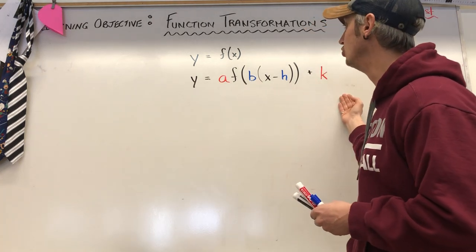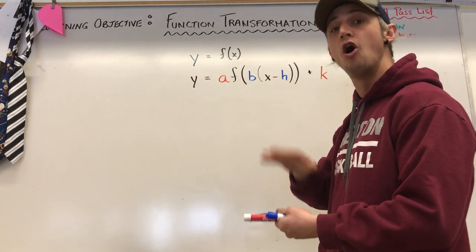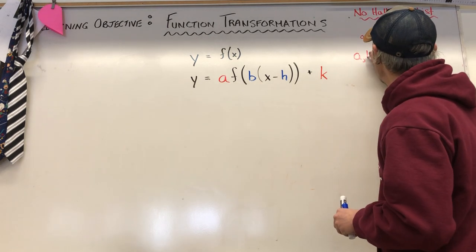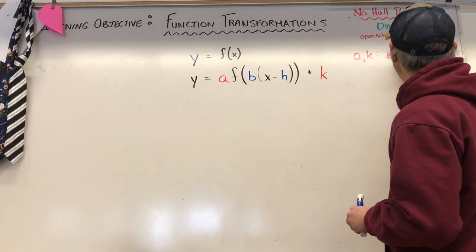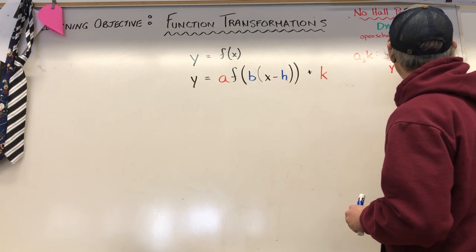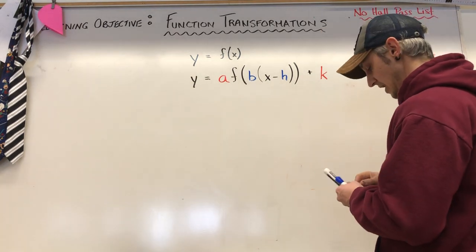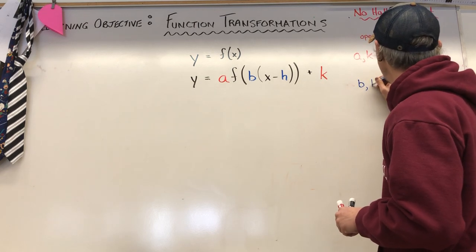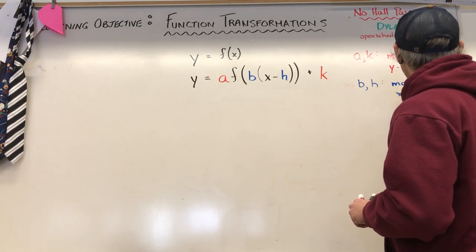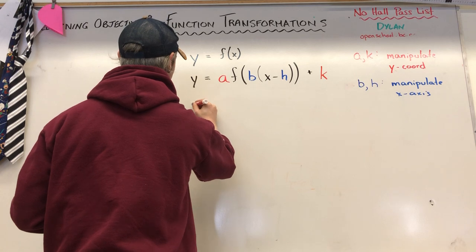In our previous video we were talking about the four things we can do to our function. We can stretch it vertically — that was the first thing, stretching and compressing, and also reflecting on the x-axis. That's what 'a' does for us. We know that a and k, in red, manipulate or change the y-coordinates; the x-coordinates will stay the same when we're playing with a and k.